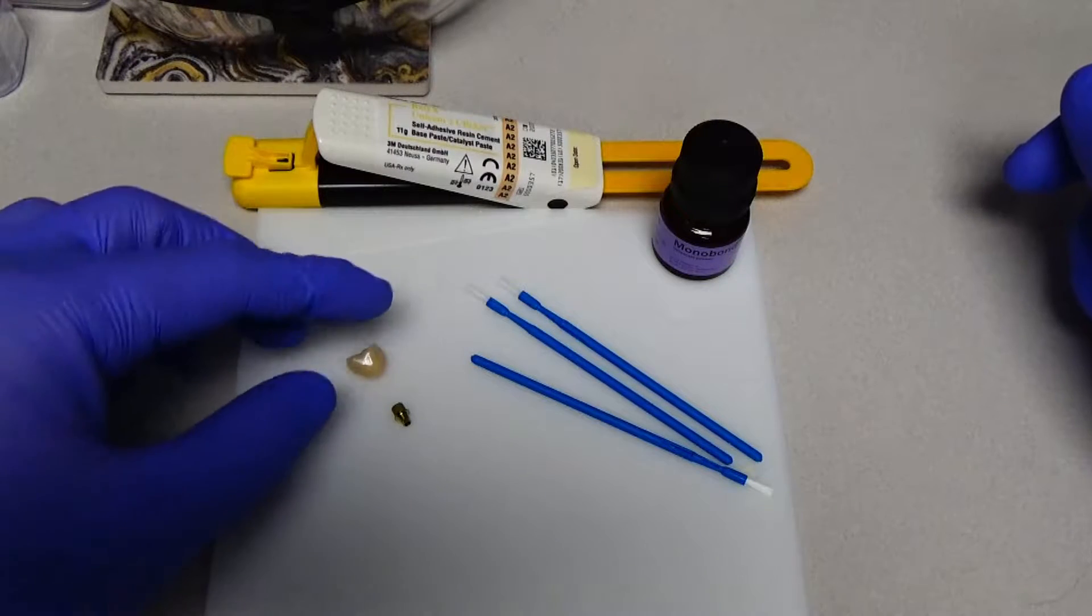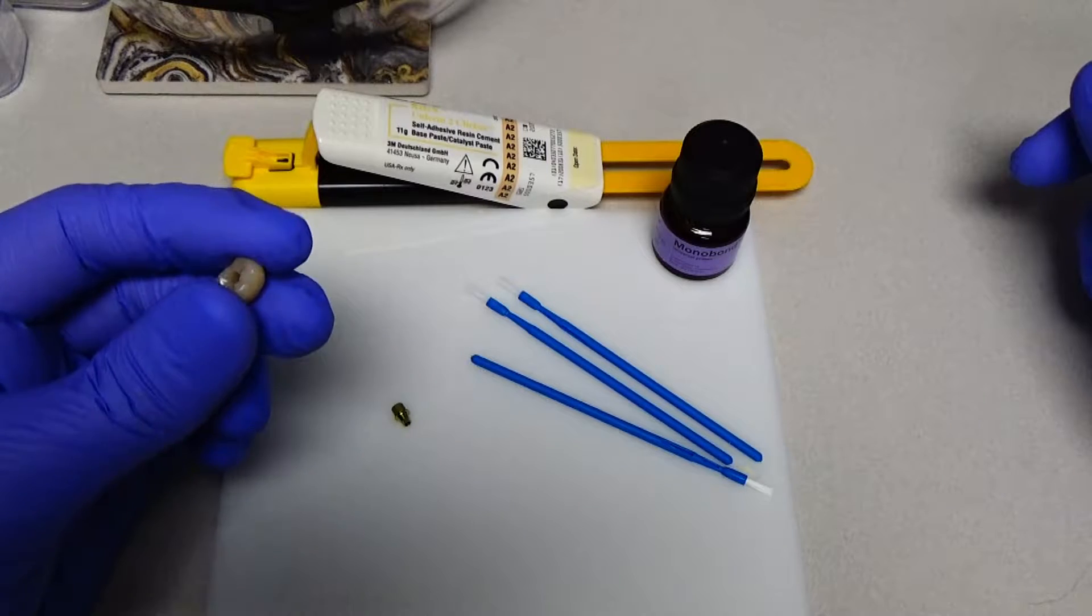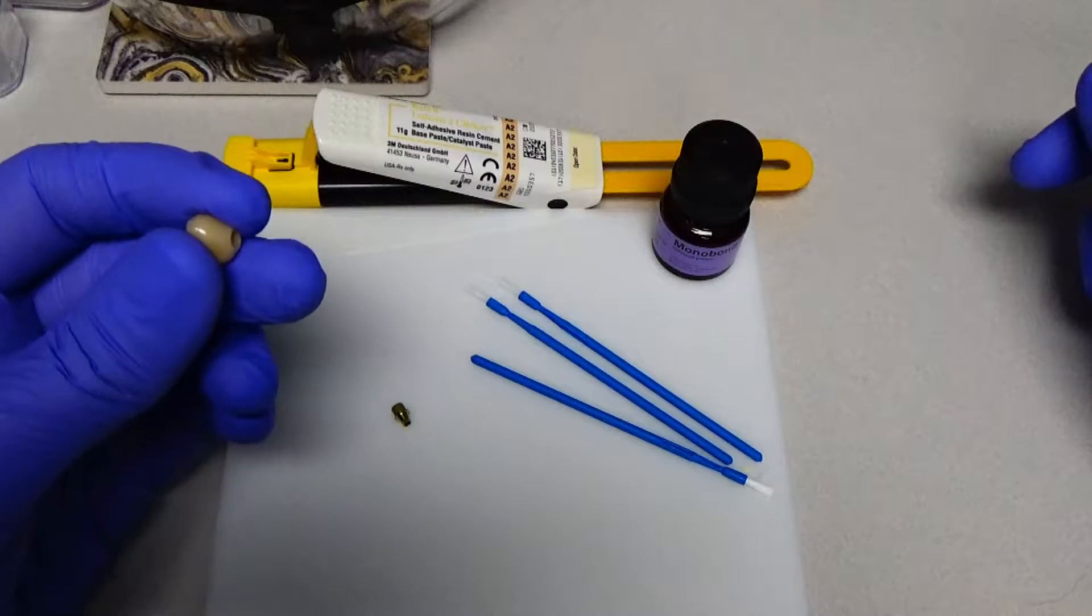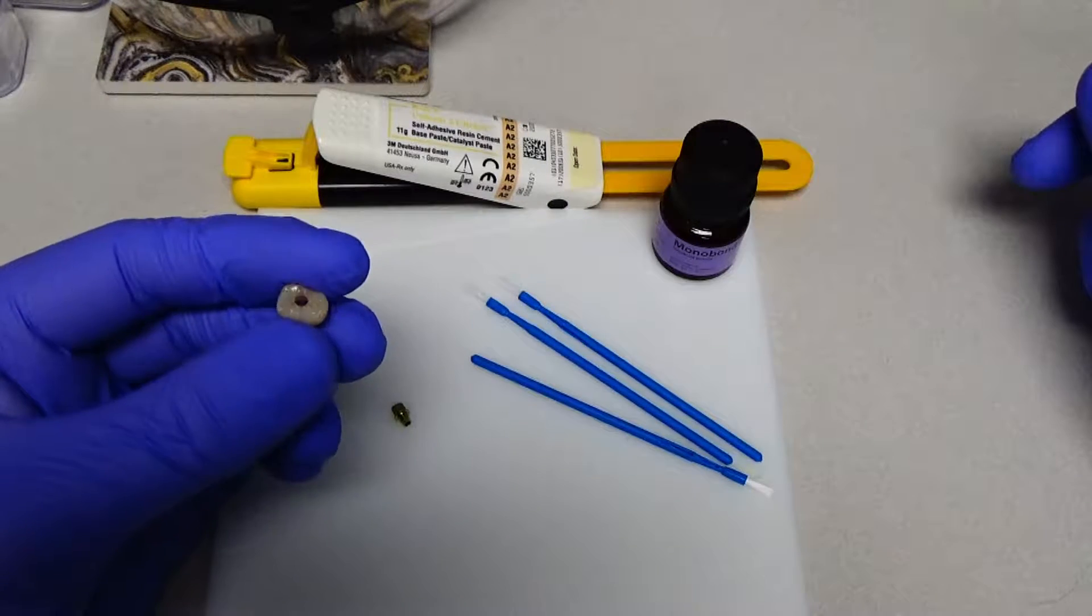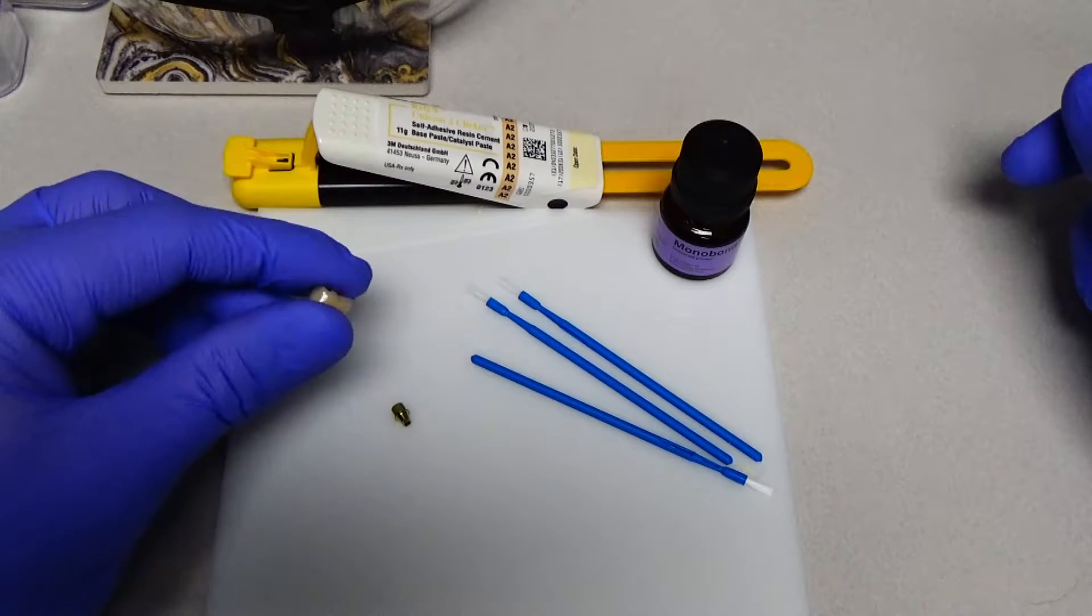Now, the zirconia crown that I have here is Zircad Prime from Ivoclar, and I've used the MEO kit. This is all monolithic, but I've used the MEO clip for the glazing and staining.